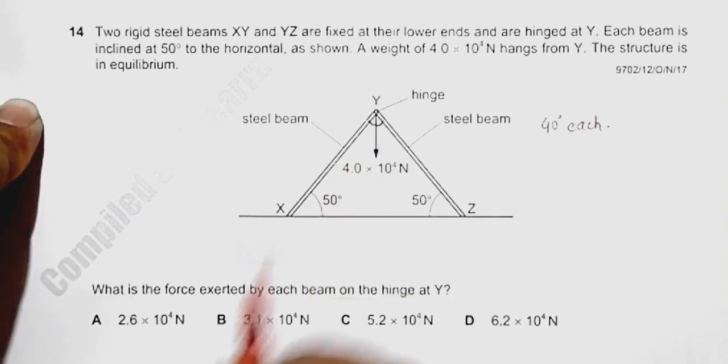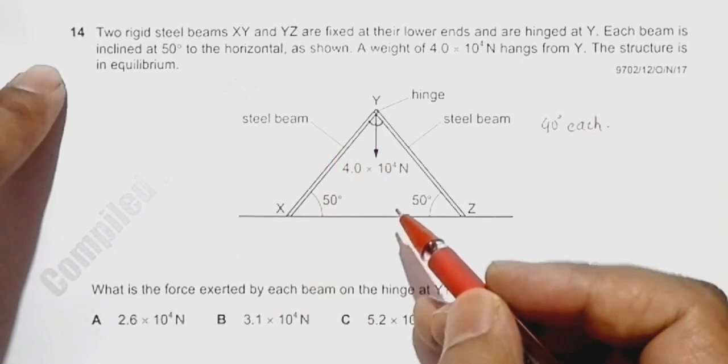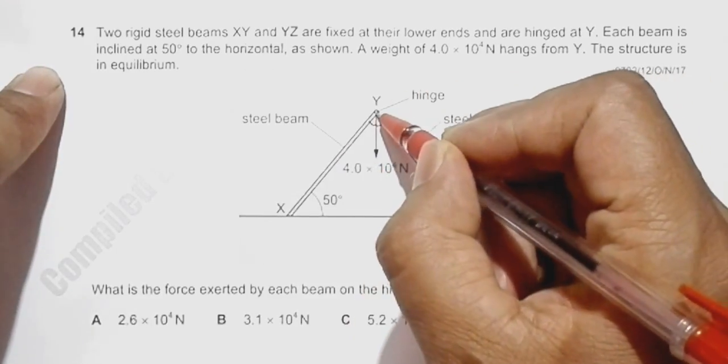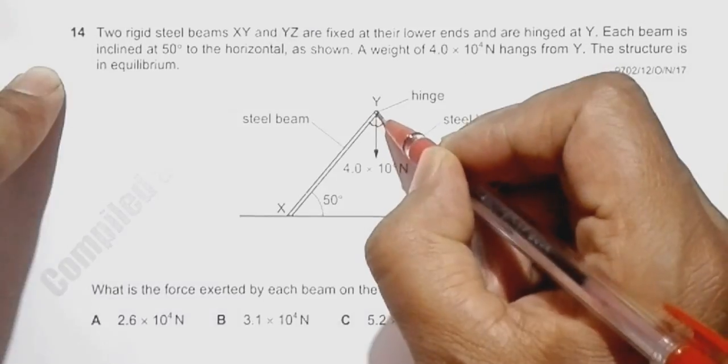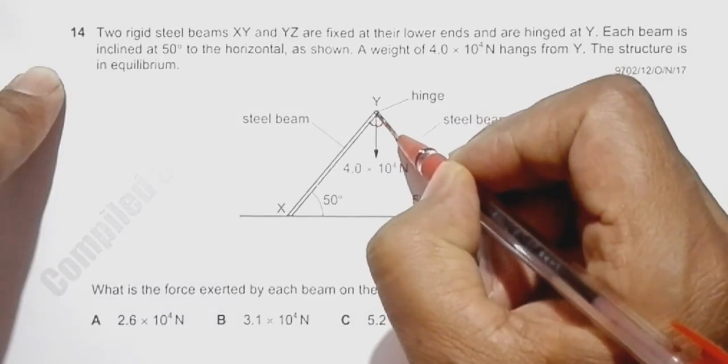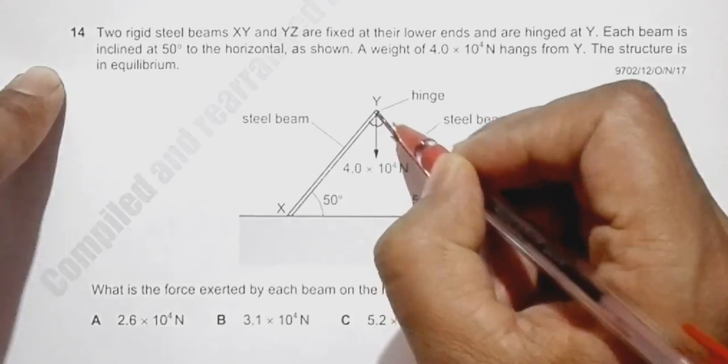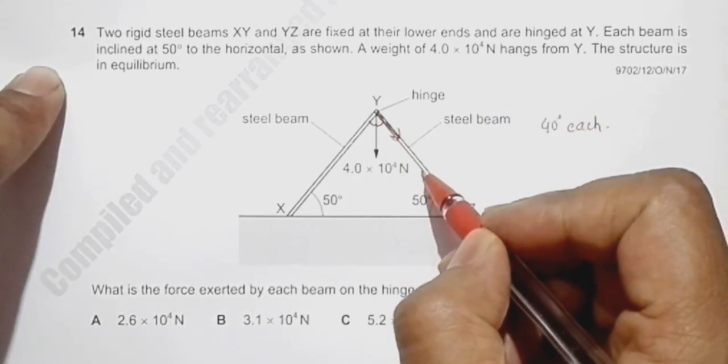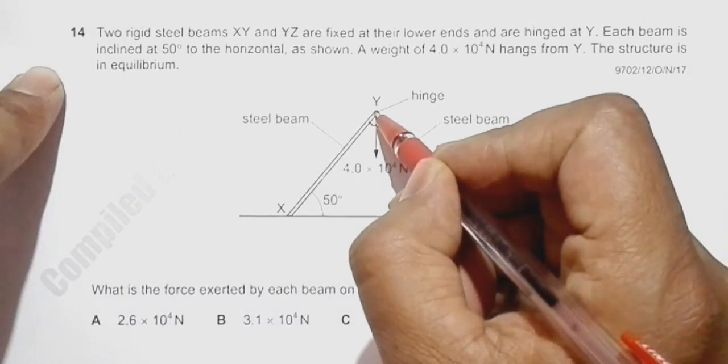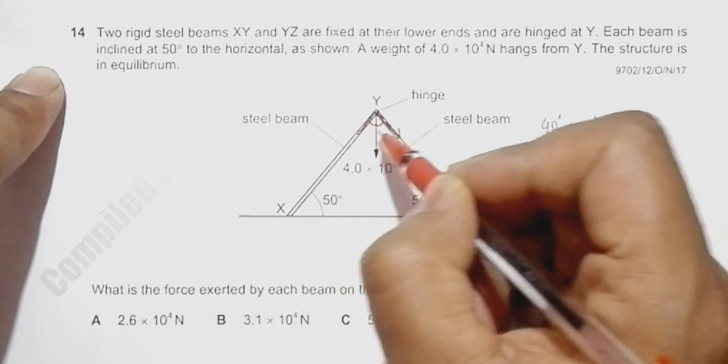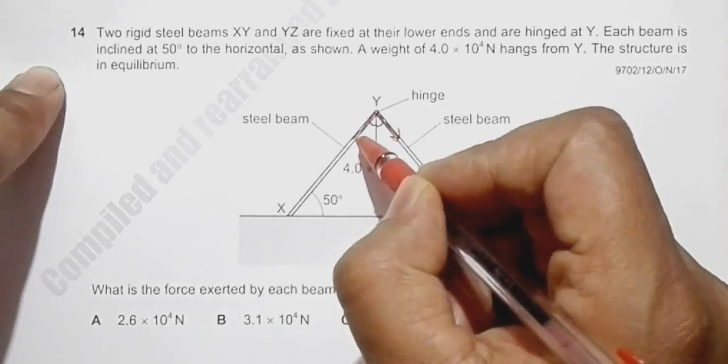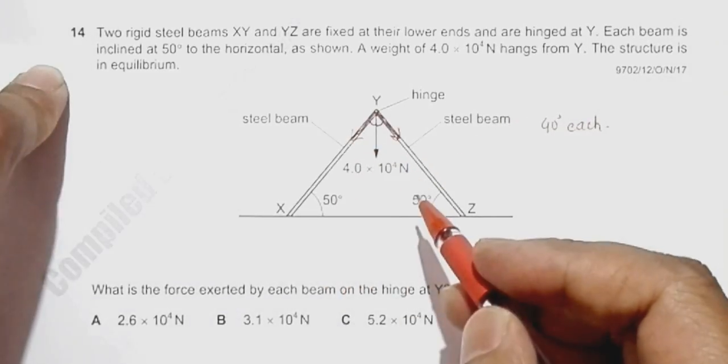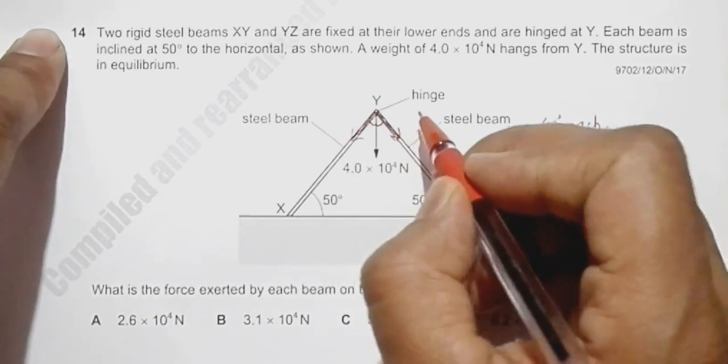Let us realize that this beam will be exerting a certain force like this on the hinge, and similarly this beam will exert a force like this on the hinge. Since they are alike in every aspect, these two forces should be equal.